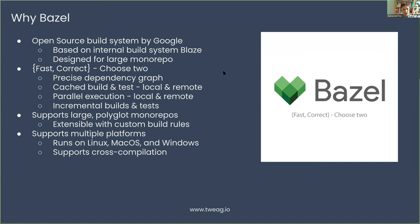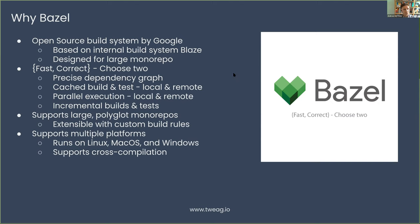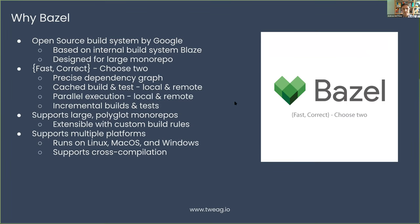With that, Bazel can provide cached builds and tests, both locally, and it also supports remote caching. Bazel has parallel execution of the various build and test steps, either by local parallelism or in principle also remote execution. Bazel also provides incremental builds and tests, meaning that if you'd already built your repository and then made some small change and rerun the build, Bazel will only rerun targets that actually changed.